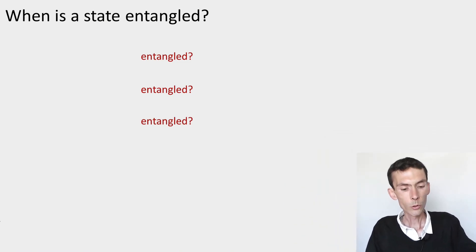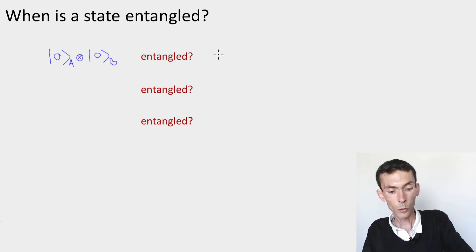Let's look at a few states that you've seen before. The first simple example would be 0 tensor 0. Is this an entangled state or not? It's not. It's a product state, right?